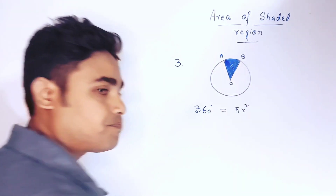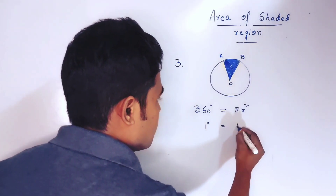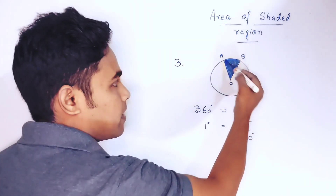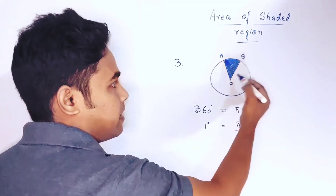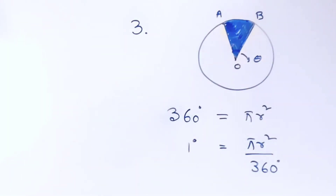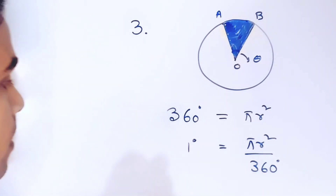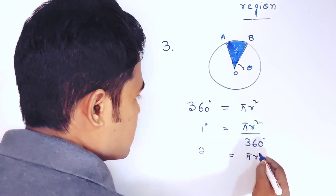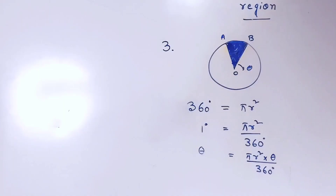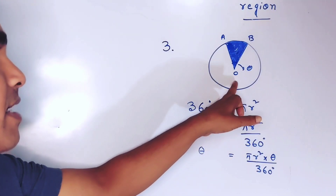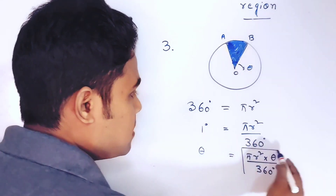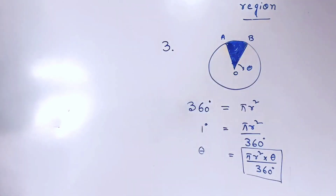So one degree corresponds to πr²/360. Suppose the angle subtended by arc AB at the center is θ — we don't know its value; it may be 30°, 40°, 60°, or 75°. For angle θ, the area of the sector will be πr² × θ/360°. Whatever the angle, the formula is πr²θ/360. Using this formula, we can easily find the area of any sector of a circle.